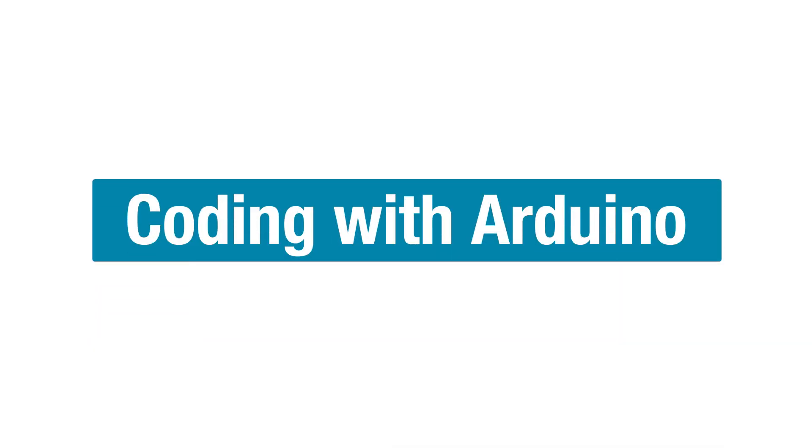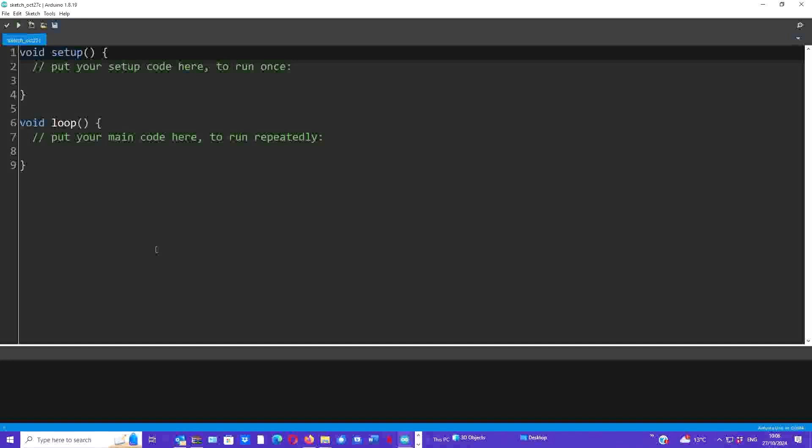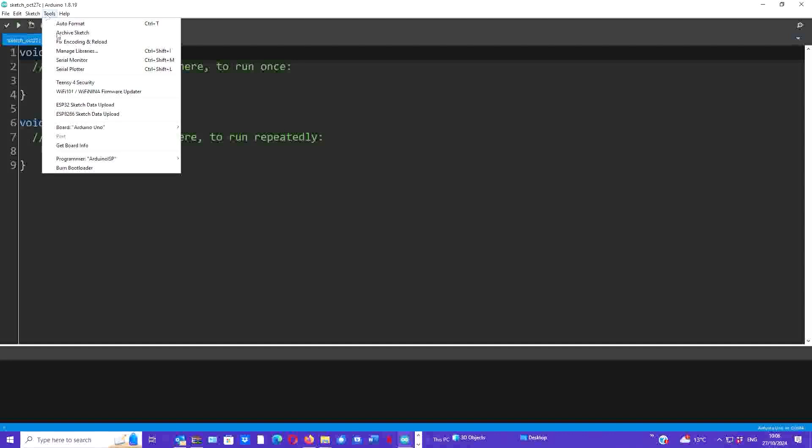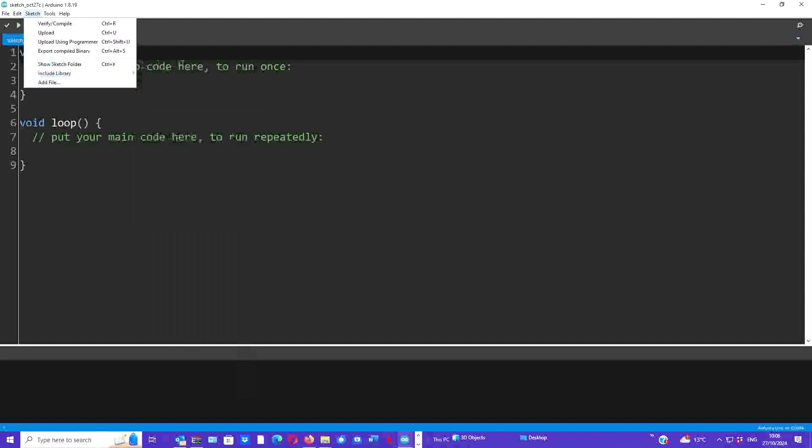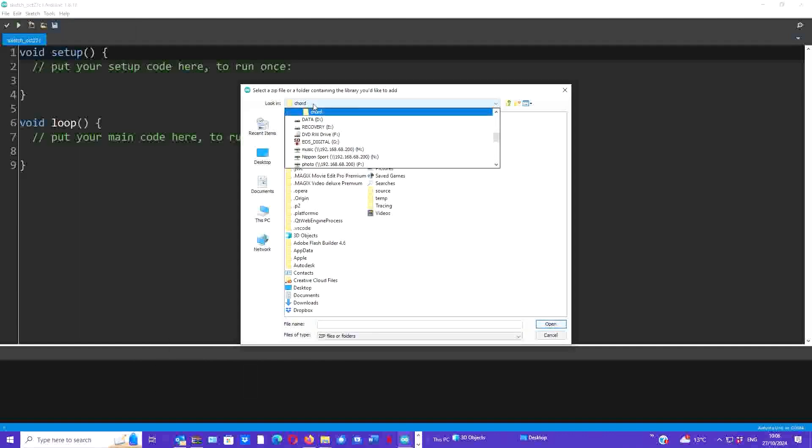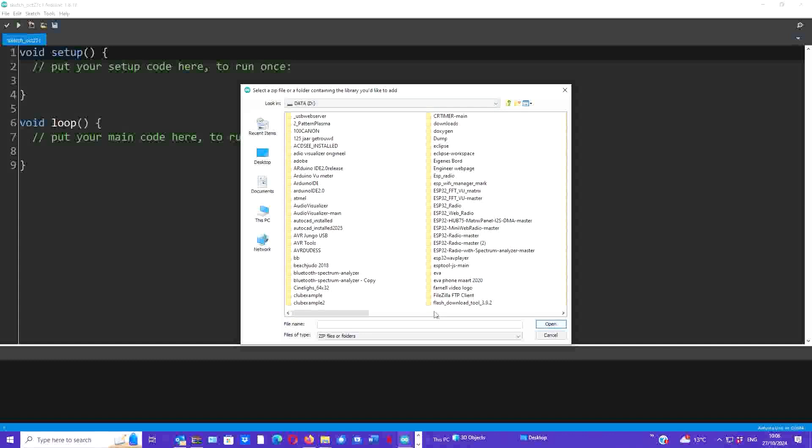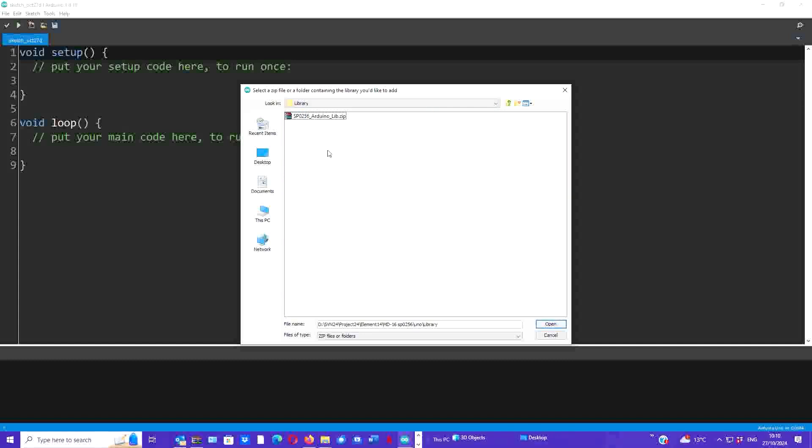So to use this chip with an Arduino, we need to install a library first. We go to Sketch, include library from zip file, and we point it to the right zip file. The library is called sp0256 Arduino lib, and I will make sure to include that file on the project page. For that you can check out the Element 14 community. So let's install that.